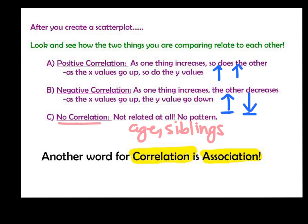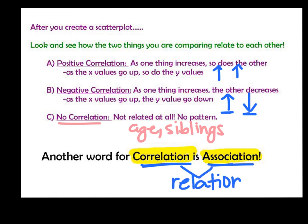Two words that you're going to see a lot, and they're interchangeable — that means they mean the same thing. When I say correlation, another word for that is association. Those both just mean how do they relate, or it's like a relationship. So you're going to be looking at graphs, and you're going to be trying to tell what type of relationship you see.